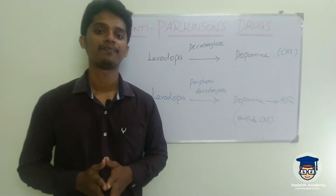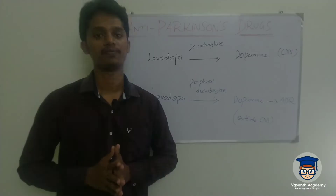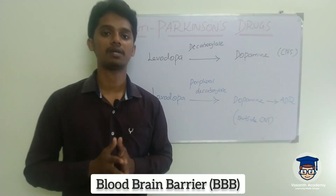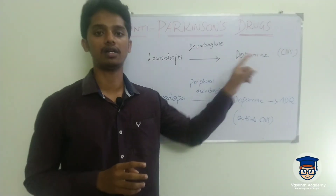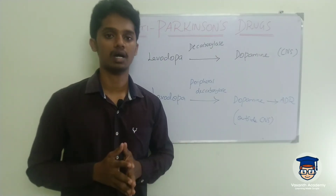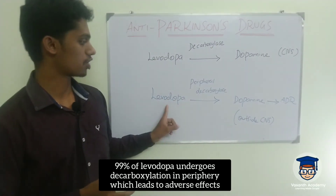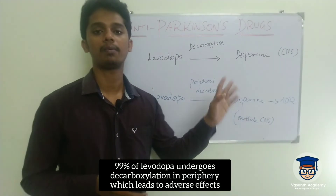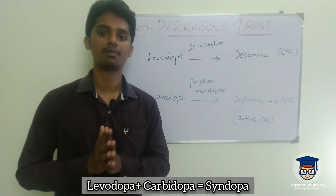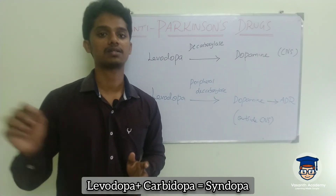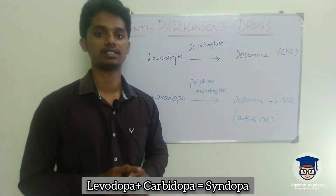When you take a Levodopa tablet, it is absorbed in the small intestine, reaches blood circulation, and then crosses the blood-brain barrier. In the brain, Levodopa is converted by decarboxylase to dopamine. However, 99% of Levodopa is metabolized peripherally outside the CNS by peripheral decarboxylase. To address this, we combine Levodopa with Carbidopa — a peripheral decarboxylase inhibitor — so more Levodopa reaches the brain and is converted to dopamine, producing beneficial effects.